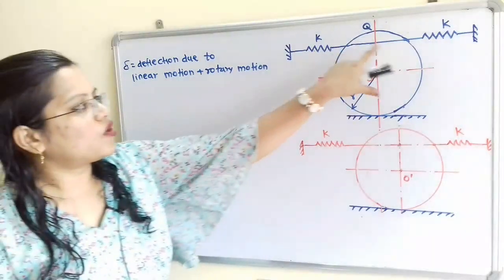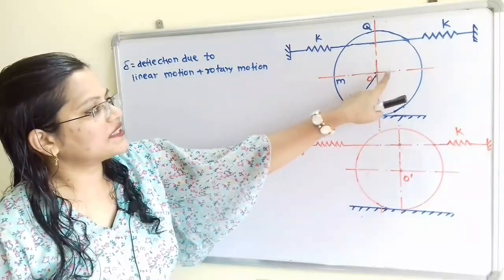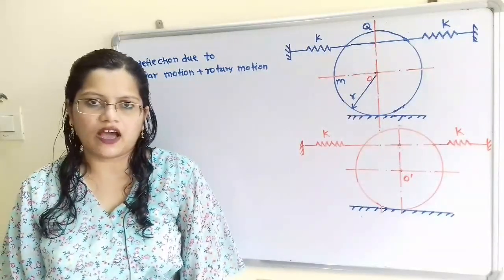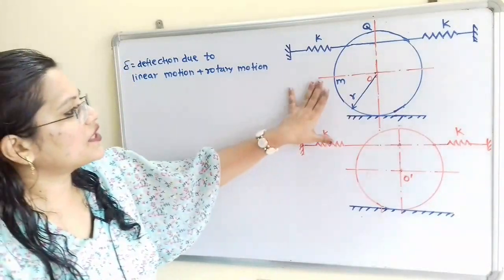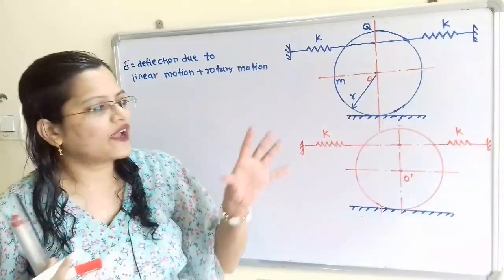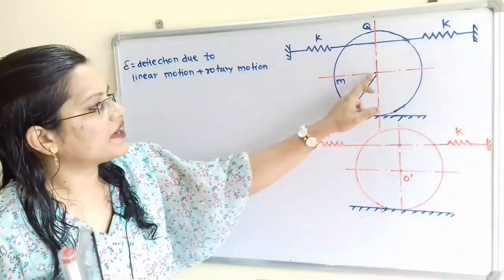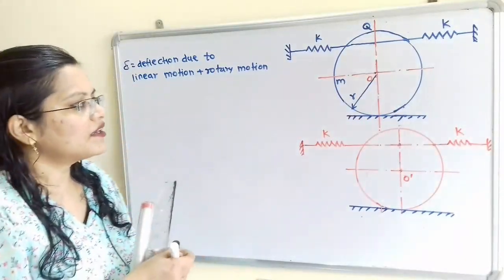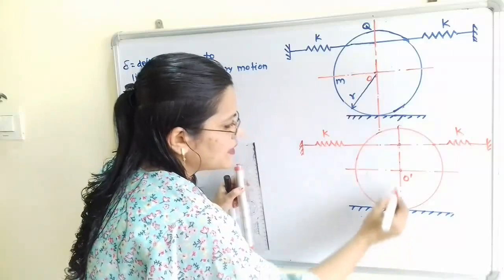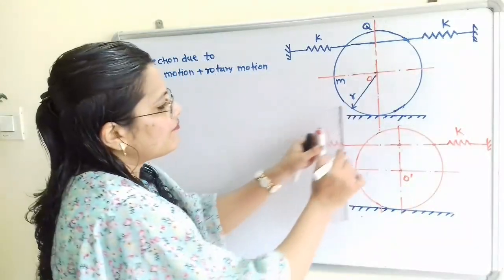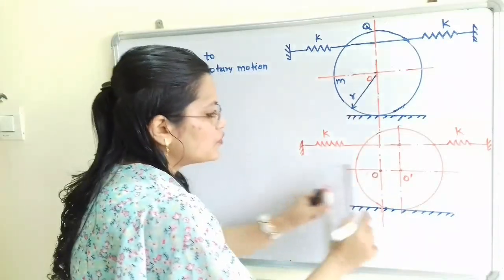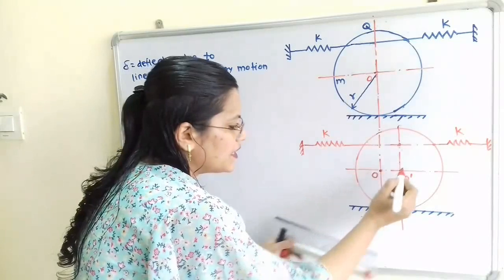When the cylinder rolls, there is a linear displacement of the center O through a distance X, and there is also an angular displacement theta. We will draw a line passing through the center at the original position O. When it rolls through an angular displacement theta, here is the final position, O dash. We draw a line passing through the final position and a vertical line through the center.